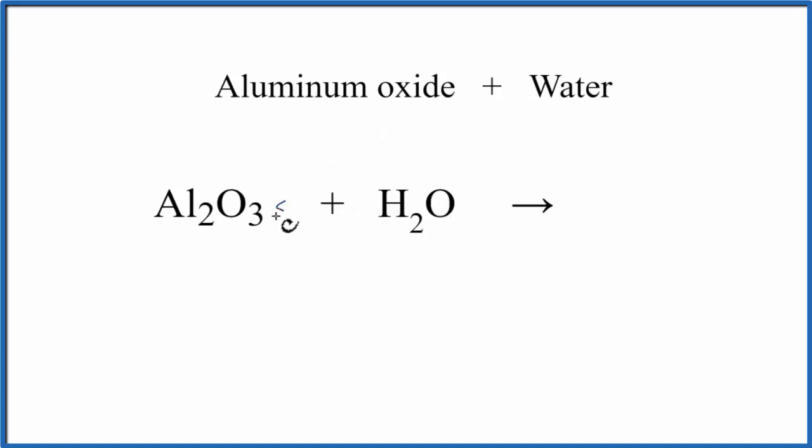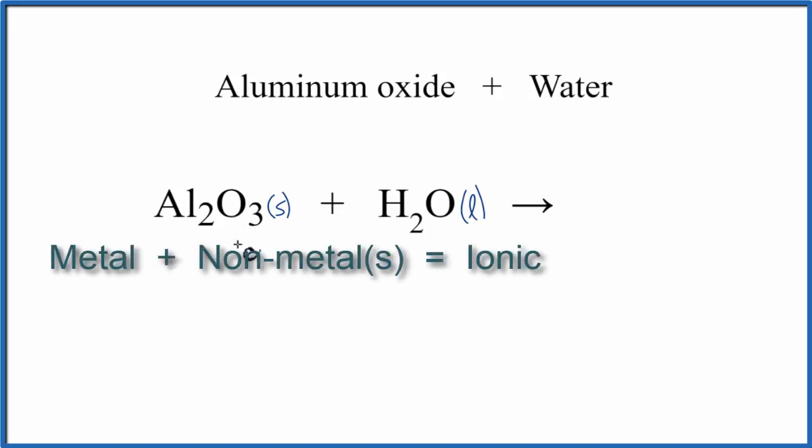So aluminum oxide, that's a solid. We'll put a little S here. And water, that's our liquid. Aluminum's a metal. Oxygen, that's a non-metal. So we have a metal and a non-metal. That's an ionic compound.